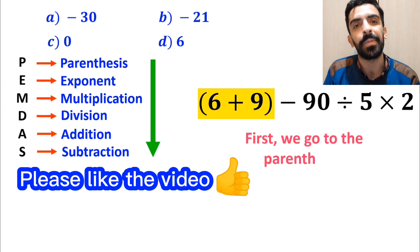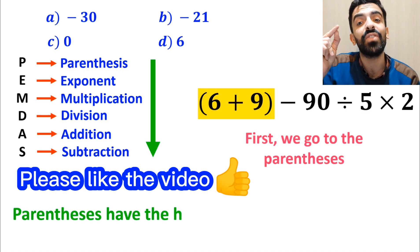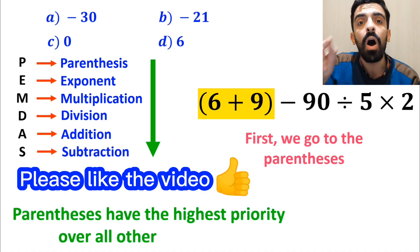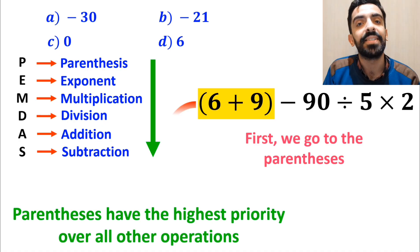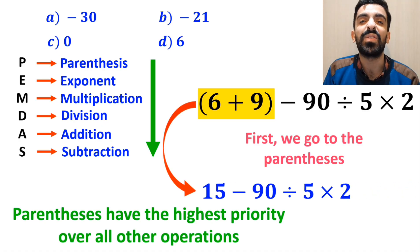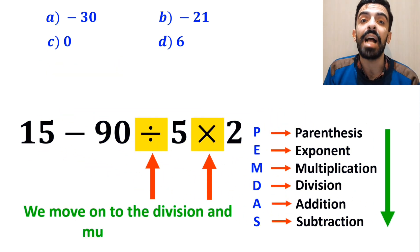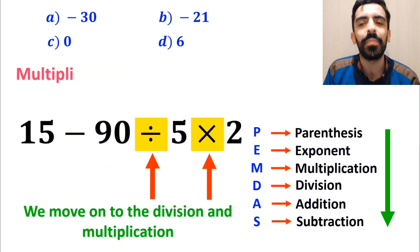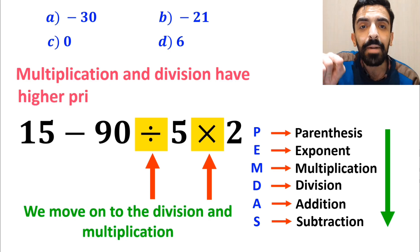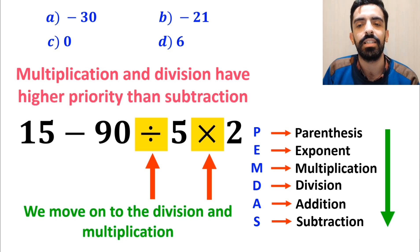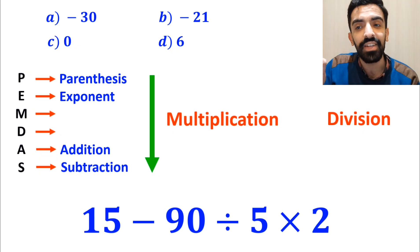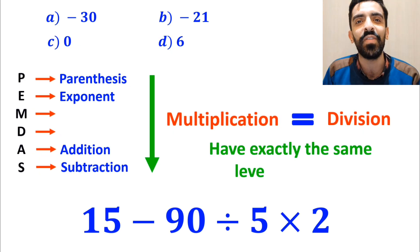First we go to the parenthesis, because according to the PEMDAS rule, parenthesis have the highest priority over all other operations. So we can rewrite this expression as 15 minus 90 divided by 5 times 2. In the next step, we move on to the division and multiplication, because multiplication and division have higher priority than subtraction. However, it's very important to note that multiplication and division have exactly the same level of priority.